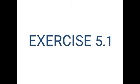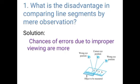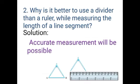Let us move to exercise 5.1. See the first question. What is the disadvantage in comparing line segments by mere observation? We know that there are many chances of error due to improper viewing. So this is the disadvantage in comparing line segments by mere observation.